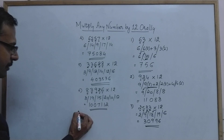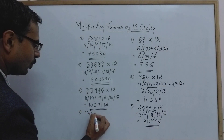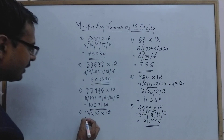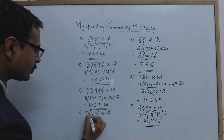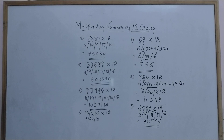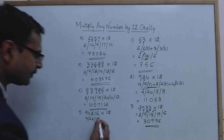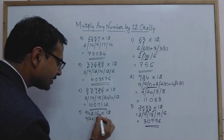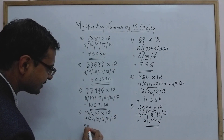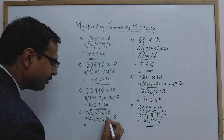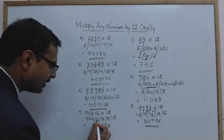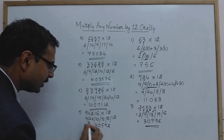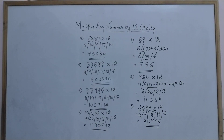Seventh example: 94216 × 12. Retain 9 first. Double of 9 plus 4 = 22; double of 4 plus 2 = 10; double of 2 plus 1 = 5; double of 1 plus 6 = 8; double of 6 = 12. Writing from the right: 2, then 9 with carry; 5 is single digit; 10 gives 0 with carry; 23 gives 3 with 2 carried; 9 + 2 = 11. So the answer is 1130592.